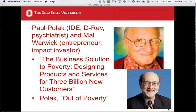Paul Pollock started several companies associated with development; he's a psychiatrist. Mel Warwick is an entrepreneur and impact investor. The title of their book is Business Solution to Poverty: Designing Products and Services for 3 Billion New Customers. It's also partly based on Pollock's earlier book Out of Poverty, with some ideas making it into the new book and some not.